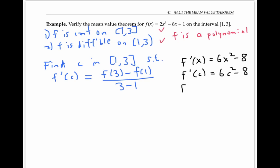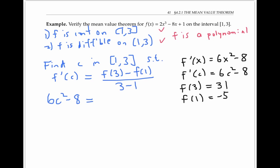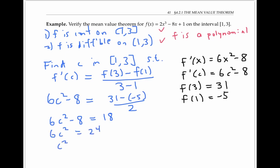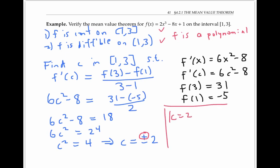We can also compute F(3) by plugging in and get 31, and F(1) is negative 5. Plugging in these values into our equation, we get that 6C² minus 8 has to equal 31 minus negative 5, over 2. In other words, 6C² minus 8 has to equal 18, which means 6C² equals 24. So C² equals 4, which means C equals plus or minus 2. Since negative 2 is not in the interval from one to three, we're left with C equals positive 2.